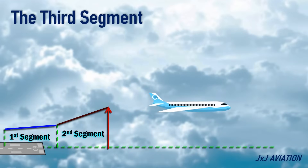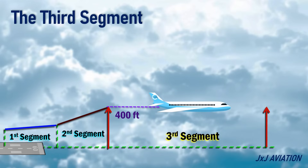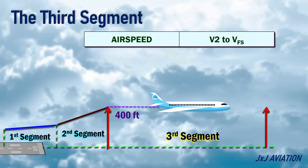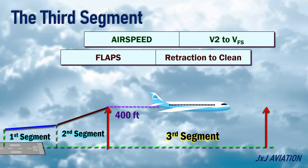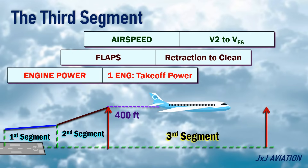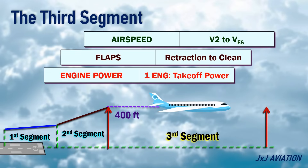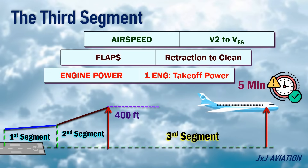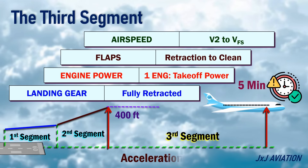The third segment. This segment starts when acceleration height is reached, or a minimum of 400 feet. The aircraft is accelerating from V2 speed to the final segment climb speed, or VFS. The flaps are retracted at the start of this segment. The engine power is maintained at takeoff power for as long as possible, or a maximum of 5 minutes. This segment is also called the acceleration segment.